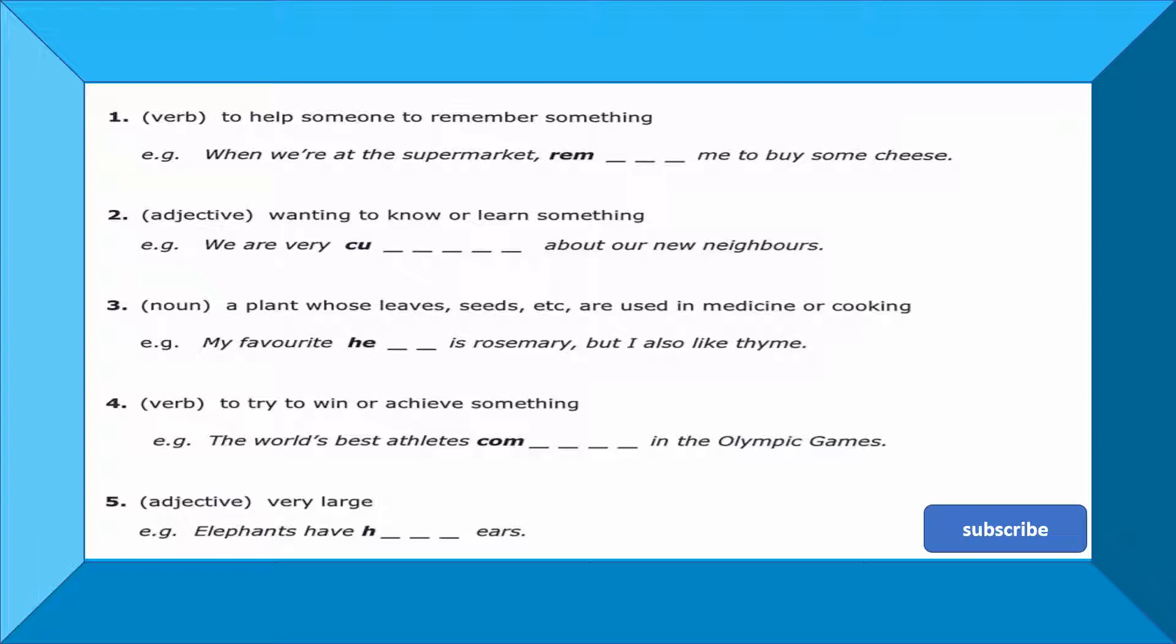We move to three. Now a plant whose leaves, seeds, etc. are used in medicine or cooking. Meaning it's a plant whose leaves or seeds are used in medicine and cooking. What would this plant be? Let's read the example: My favorite - EH, missing letters for the plant - is rosemary, but I also like thyme. Meaning the plant. Here he's talking about a plant, or the herb. This is the word we're searching for, meaning plant or herb. This is missing two letters. What is it? The favorite plant or favorite herb is rosemary, but I also like thyme. What is the meaning of this word? What is the word in English?